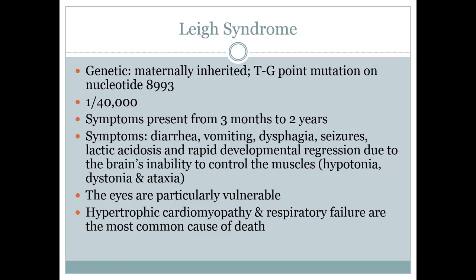Let's jump back to Leigh's syndrome. It is a genetic disorder which is maternally inherited. It's a point mutation that changes a thiamine to a guanine on nucleotide 8993. It's relatively rare, typically only occurring in 1 in 40,000 births. However, the symptoms start presenting at a very young age, usually between 3 months and 2 years, and can range from stomach issues like diarrhea and vomiting to seizures.